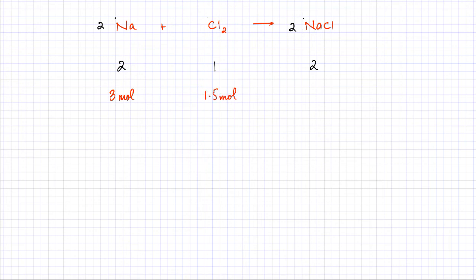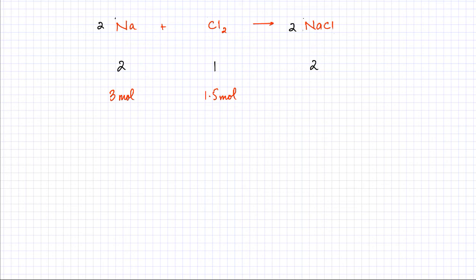Similarly, we can use ratios further: 1 Cl₂ produces 2 units of NaCl — that is double the amount. So if I have 1.5 moles of Cl₂, the amount of NaCl produced would be 3 moles.